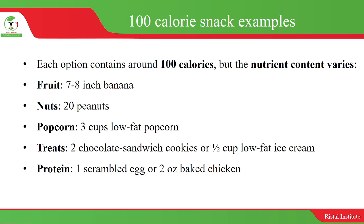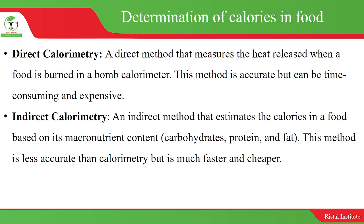So with these few examples, you can be able to quantify how much calories you may consume in a day from a specific food item. Determination of calories in food — how do we find out how many calories are contained in food? We've been talking about 100 calories in a 7 to 8 inch banana or 100 calories in 2 eggs. One of the ways is using a method called calorimetry.